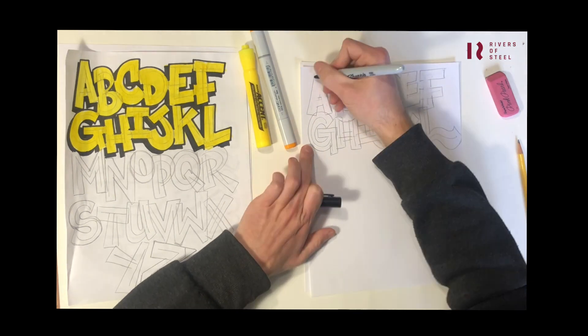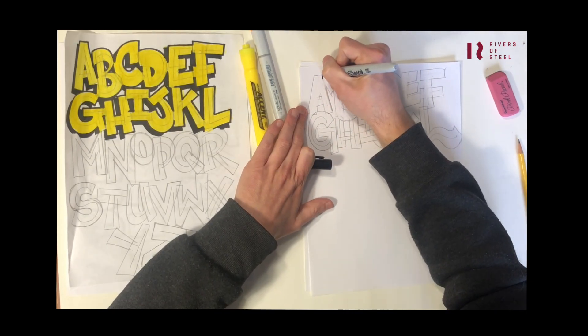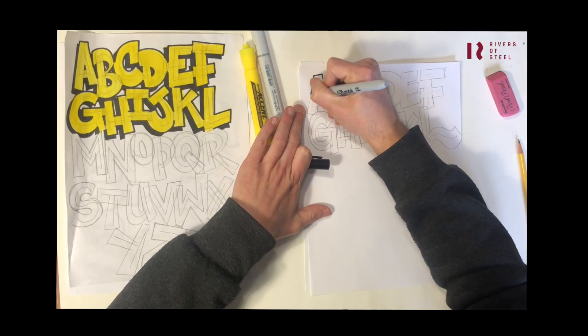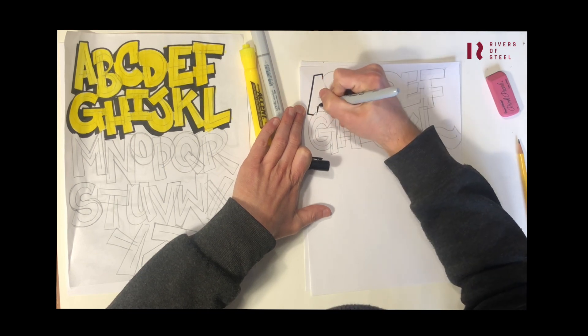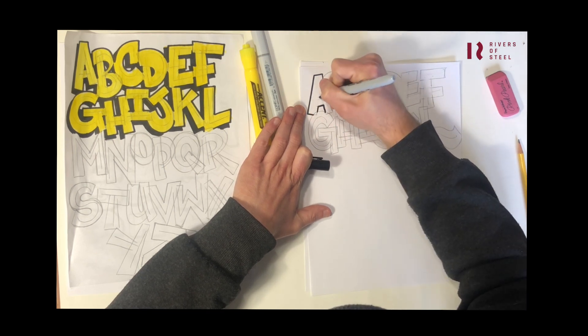Before I erase those lines, when we outline it, I'm not going to do the bottom part of those letters because I still want to do the rest of the alphabet.